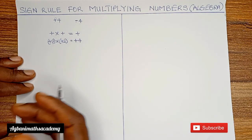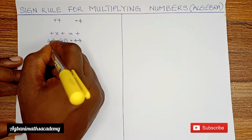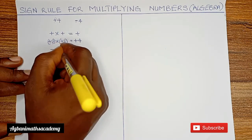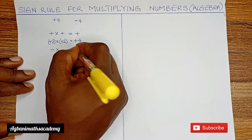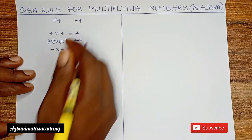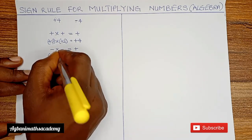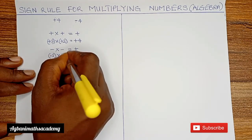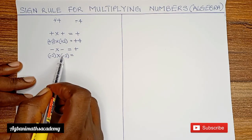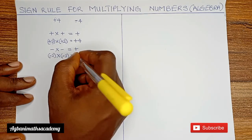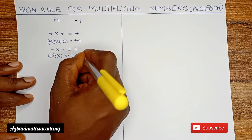Now, what about a situation where we have two negative numbers multiplying each other? Minus multiplied by minus gives a positive answer. For example, minus 2 multiplied by minus 2: minus multiplied by minus gives us plus, and 2 multiplied by 2 gives us 4.